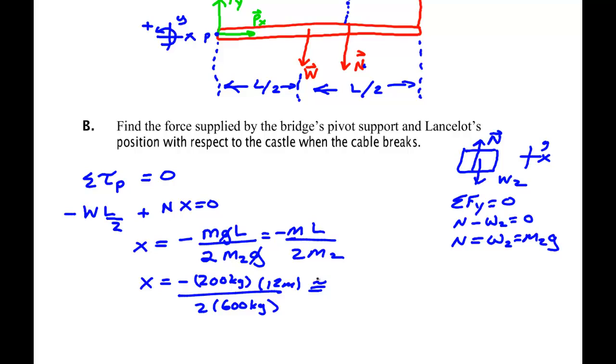So, where is Lancelot when he breaks the bridge? 200 times 12 divided by 1200 gives me 2 meters. So my drawing is not to scale. This is 12 meters along. The weight is 6 meters. The fact is that Lancelot is back over here somewhere, only 2 meters. He's not even a quarter of the way across the bridge. So my drawing is not to scale. That's alright. You don't have to know the answer before you start. You just have to set up the problem correctly.